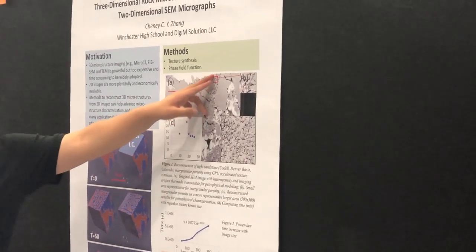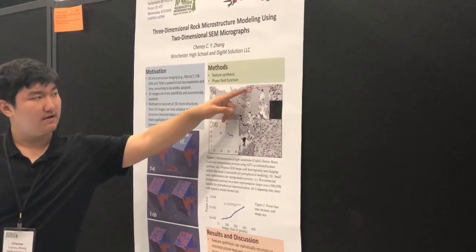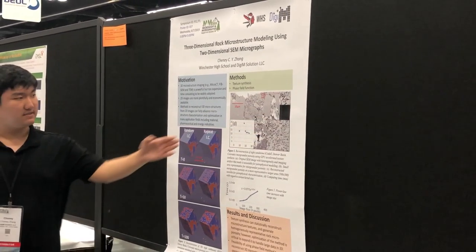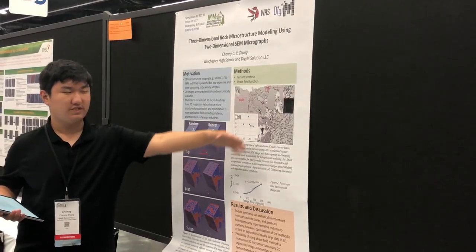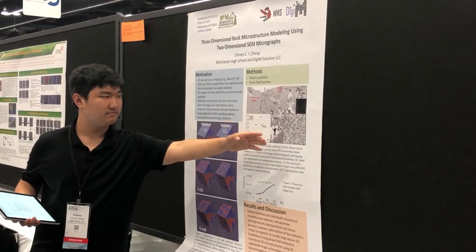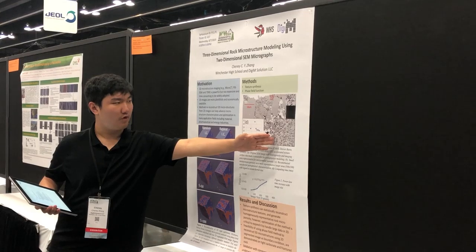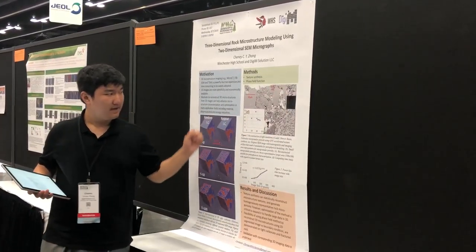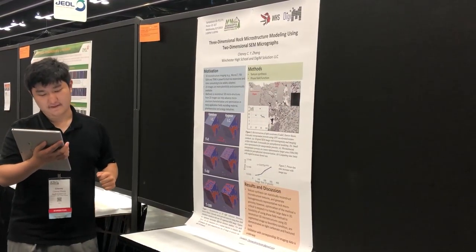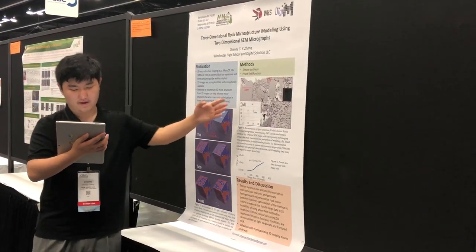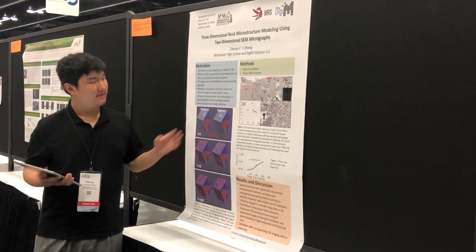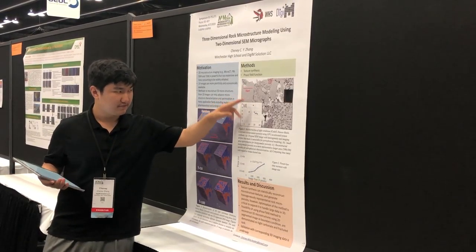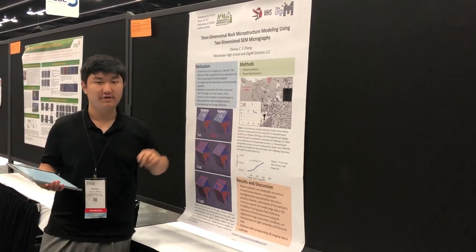Figure C is where the reconstruction happens. We reconstruct this small piece into this larger image, and Figure C is both representative — it has the material that we want — and also a large amount. Figure D is a graph that shows time versus kernel size. As you can see, it starts with a strong positive correlation but then turns into a negative correlation.